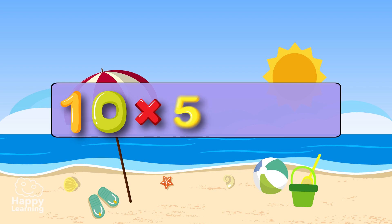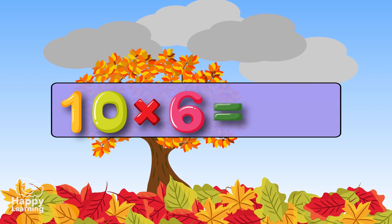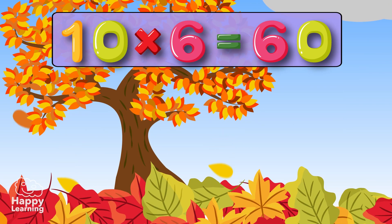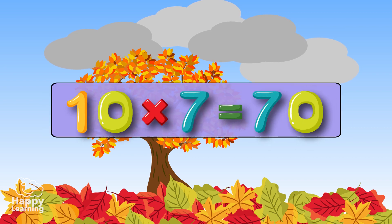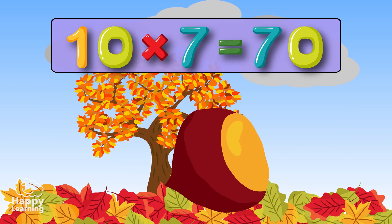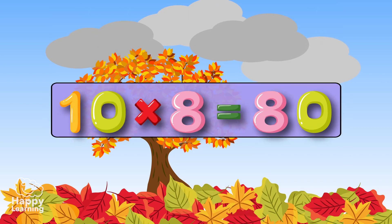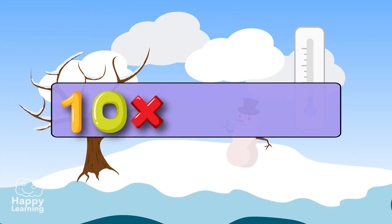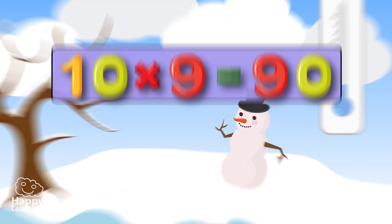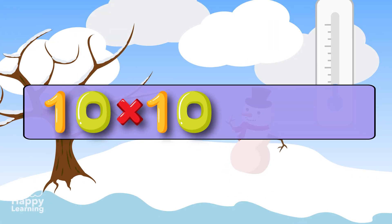10 times 5 is 50. 10 times 6 is 60. 10 times 7 is 70. 10 times 8 is 80. 10 times 9 is 90. 10 times 10 is 100.